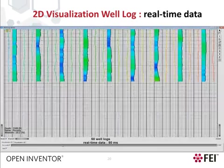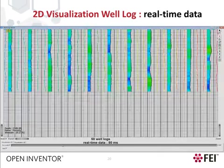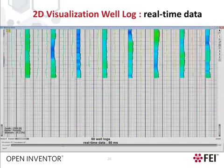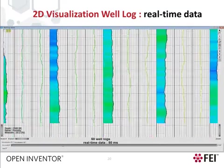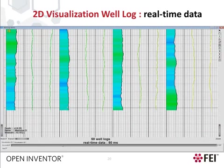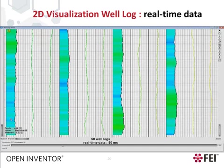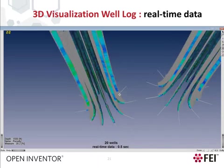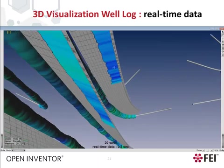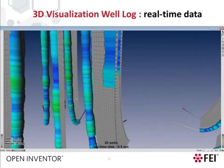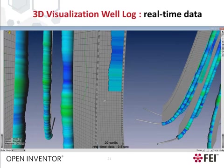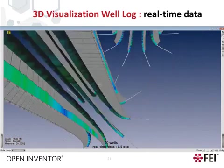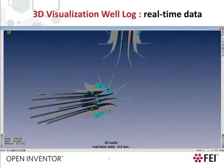The well log visualization can be updated constantly with real-time data coming from sensors. In this example, we see 50 well logs being updated and visualized very smoothly. All the logs are being updated every 50 milliseconds. Real-time update of the 3D visualization is possible as well, although at a slightly lower rate because of the high-resolution textures used to represent the well logs on the ribbon plot. In this example, we see a field with 20 3D wells updated and visualized smoothly, with all the well logs and textures updated twice per second while the frame rate remains very interactive.